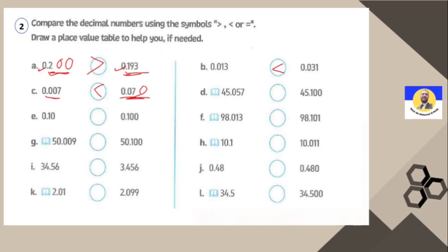Letter D: as in the book — 45 is the same as 45 before the decimal. After the decimal, here starts with 0 but here it's 1, so 1 is greater than 0. Letter E: zero equals zero, one equals one, zero equals zero, and here there is a trailing zero which is extra — so both numbers are equal. You can add an extra zero to confirm both are 100 thousandths — the same.